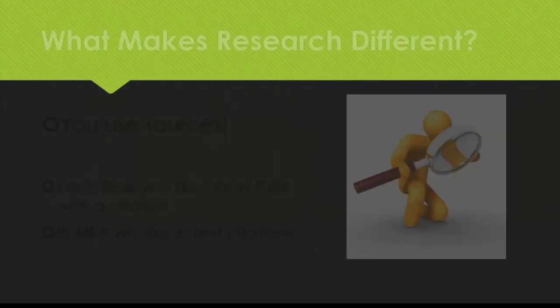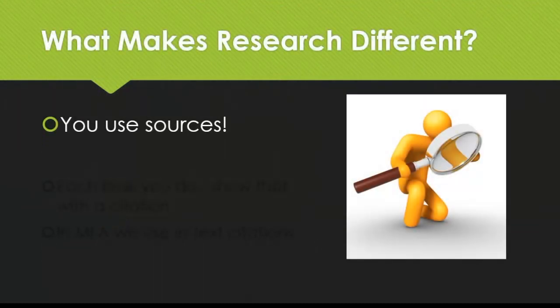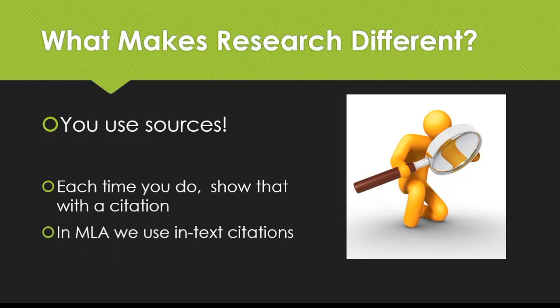The main thing that separates a research paper from another type of assignment is that you should be using sources throughout the paper to back up your statements. Each time you do this, you need to indicate that you're using someone else's work to avoid plagiarism. In MLA style, this is done through the use of the in-text citation.